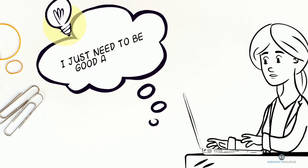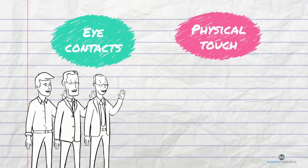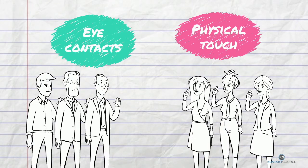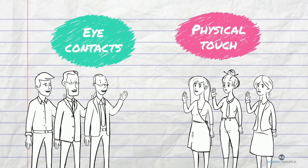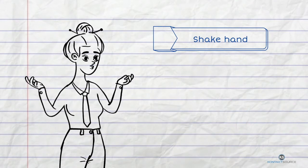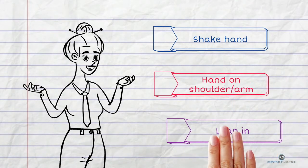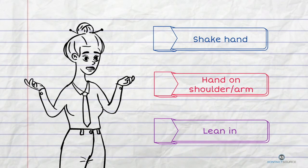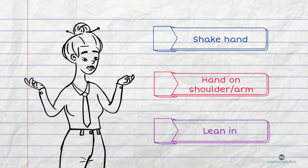But make warm, kind eye contact with people. Learn to be comfortable with physical touch, and I don't mean that in any kind of sensual way. What I mean is that if someone shakes your hand or puts their hand on your forearm or your shoulder, or leaning in.